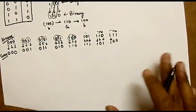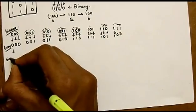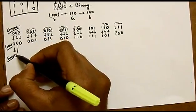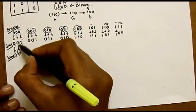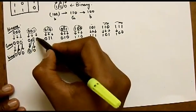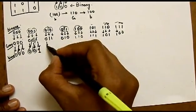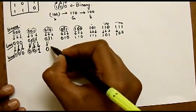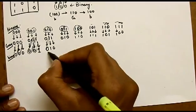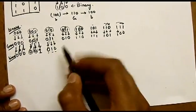Now let us convert the gray code back to binary. The same rule applies: MSB is always the same for both binary and gray. For gray to binary conversion, we XOR diagonally. 0 and 0 XOR is 0, and again 0 and 0 XOR is 0. MSB is always the same; 0 and 0 XOR is 0. 1 and 0 XOR is 1. We are getting the equivalent binary code back.